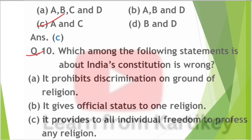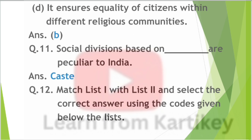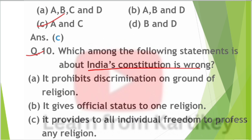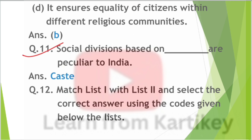Question number 10: Which statement about India's constitution is wrong? Option A — it prohibits discrimination on grounds of religion; option B — it gives official status to one religion; option C — it provides freedom to profess any religion; option D — it ensures equality of citizens within different religious communities. Answer: option B — it gives official status to one religion.